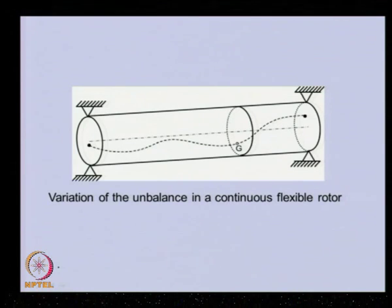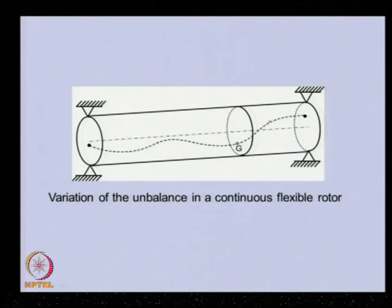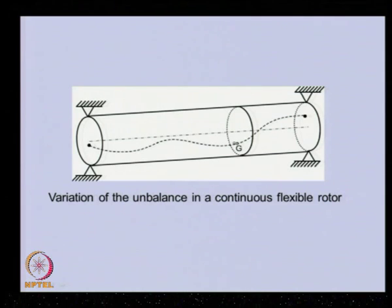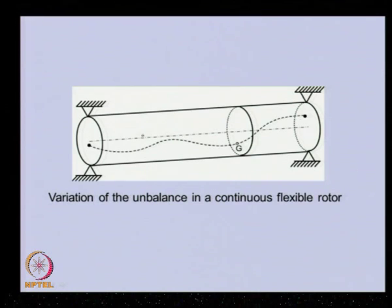Another category is the thick flexible rotor, where the dotted line represents the variation of the center of gravity. If we take a particular slice, the center of gravity may be at one position while the center of rotation is at another — this is the eccentricity in the radial direction. For different slices, not only the orientation but also the radial position of the center of gravity changes, though this eccentricity is of the order of microns in actual rotors.